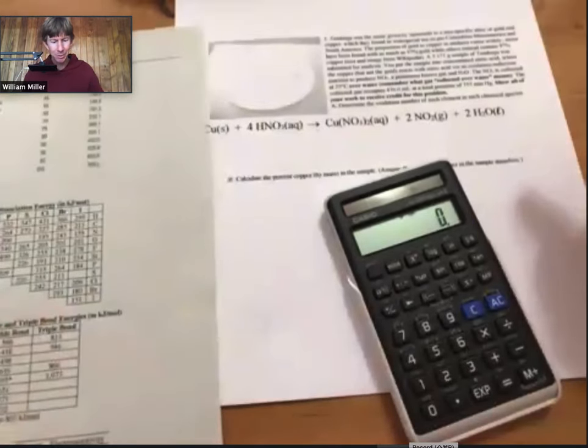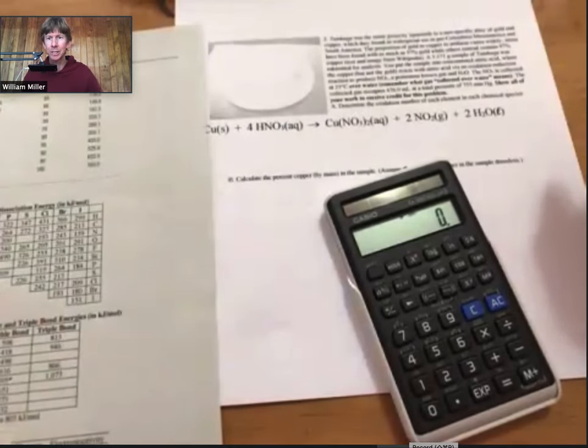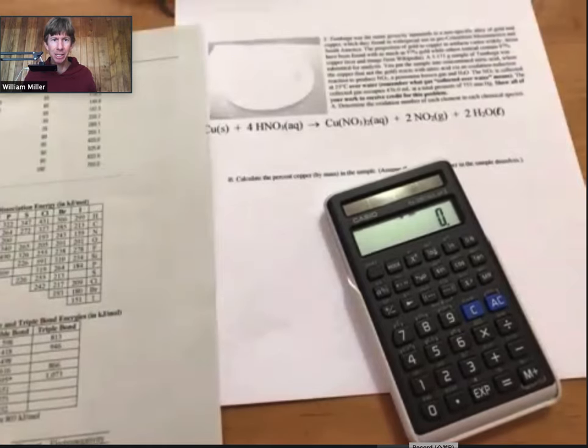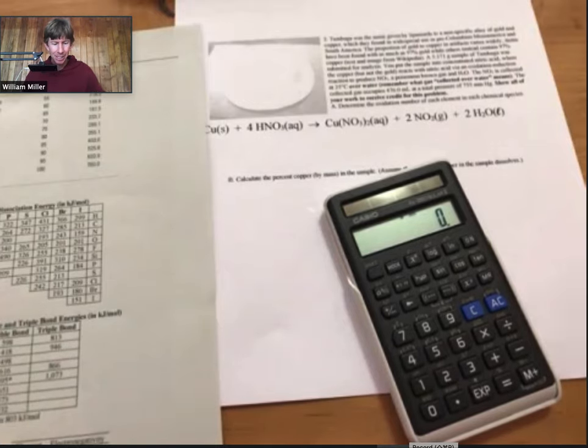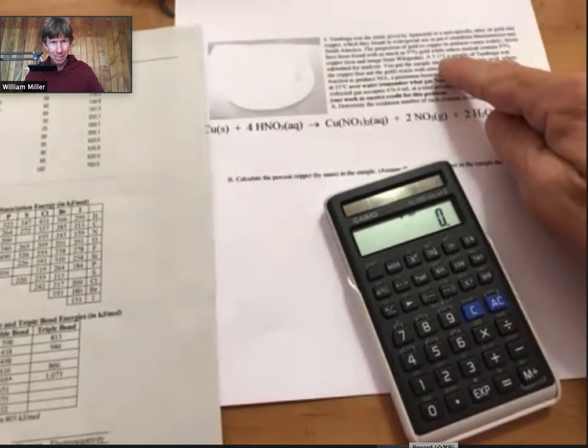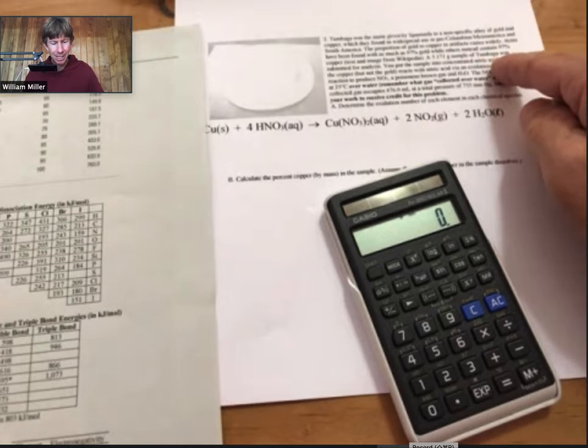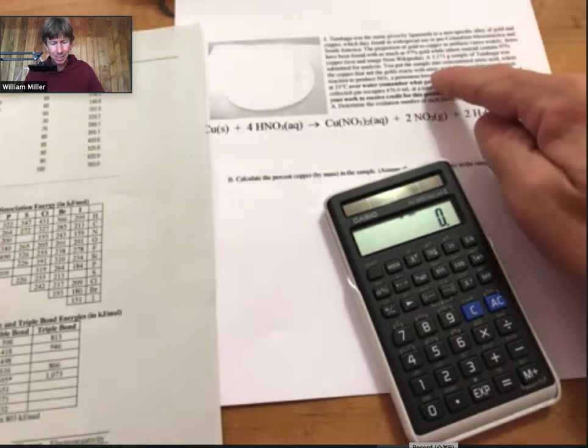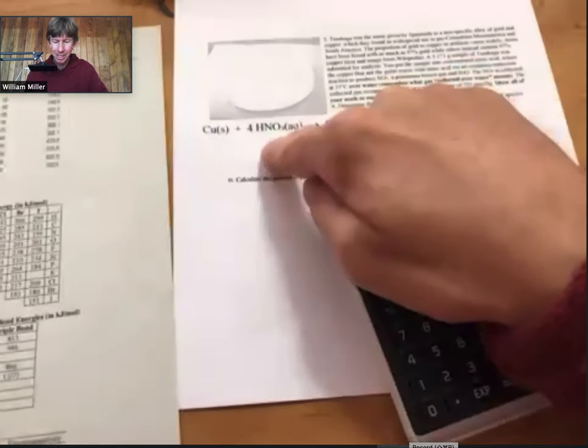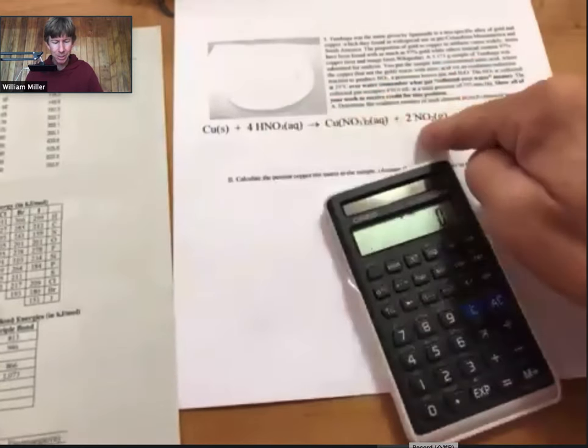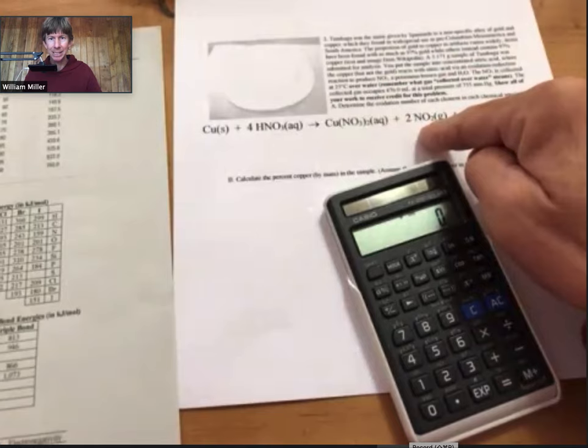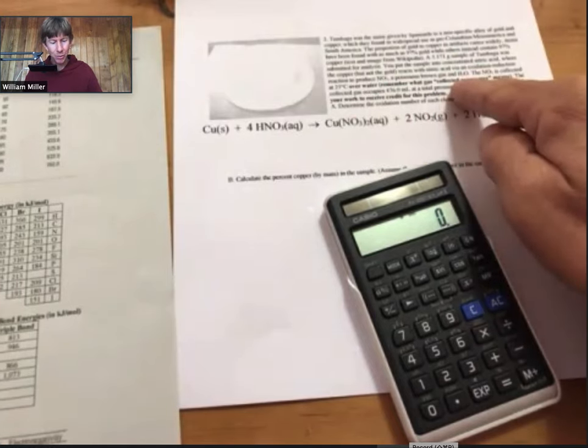As I read over this problem, it talks about something called tumbaga, which can be anywhere from 97% gold to 97% copper, or anywhere in between. And the point of this problem is to figure out what percent copper this sample of tumbaga is. If I read over the problem, I can see that there is a 5.171 gram sample, and that sample is dissolved in nitric acid. That nitric acid then produces nitrogen dioxide gas. That gas is then collected over water.